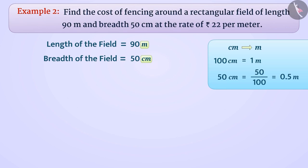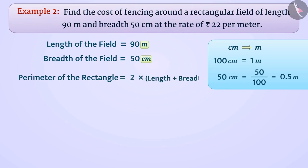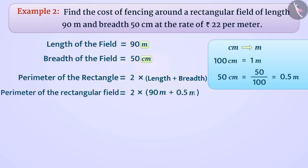In order to find the total cost of building the fence, we need to find the perimeter of the ground. The perimeter of a rectangle is 2 into length plus breadth. Therefore, the perimeter of the rectangular field is equal to 2 into 90 meter plus 0.5 meter, which is equal to 2 into 90.5 meter, which is equal to 181 meters.